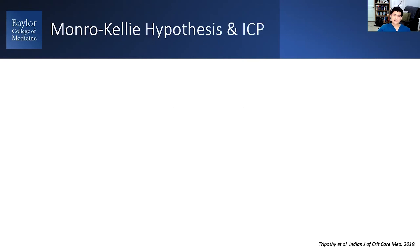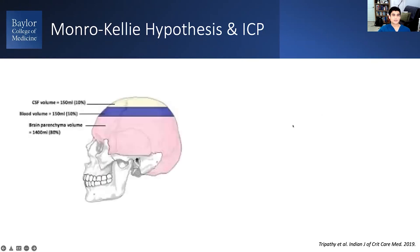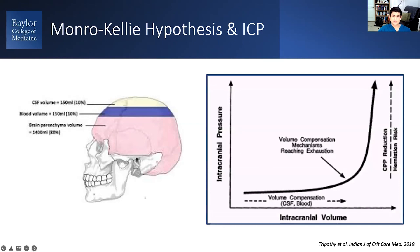It's helpful to take a step back and look at the Monroe-Kelly hypothesis. Basically, your intracranial compartment has a fixed capacity. It's mostly taken up by brain parenchyma, but also by CSF and blood volume in a minority proportion. Any increase in volume is going to increase intracranial pressure, and at some inflection point, you'll have a dramatic increase in intracranial pressure and be at high risk for herniation.